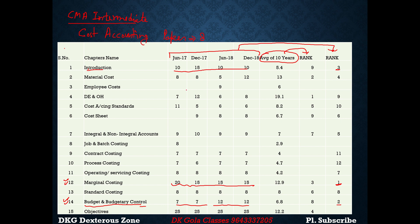The fourth ranking is material costing — a basic but essential chapter you have to do. For the fifth ranking, we have integral and non-integral accounts. As you can see, it scores around 9 to 10 marks consistently, so you have to cover it.